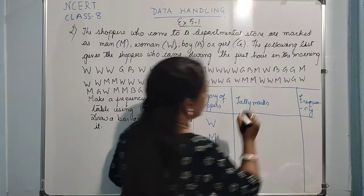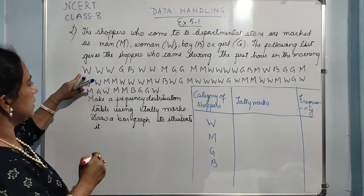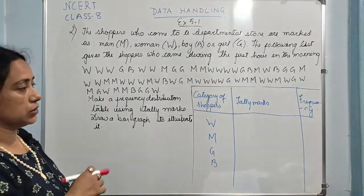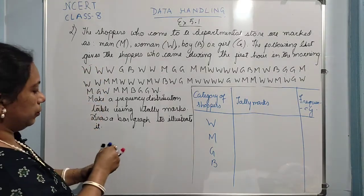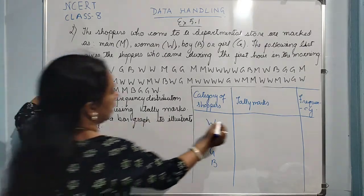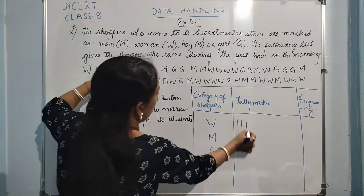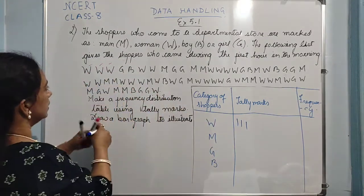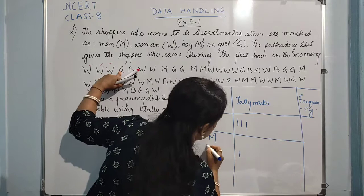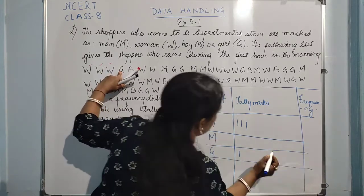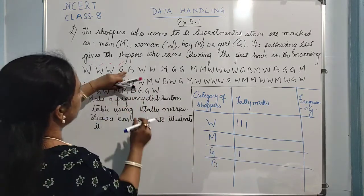Now if we go on counting how many women there are, you may get confused. So the easiest way is to go on counting from the first one. First one is women — we will mark one tally. Again women — one more. Women — one more. So three tallies for women so far. The fourth one is girl, so for one girl we will be writing one tally mark here. Then comes the boy — one tally mark for boy. Again women — one more tally for women.